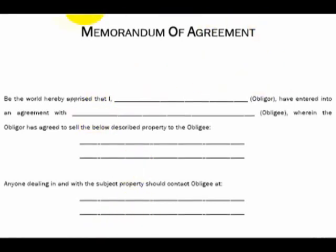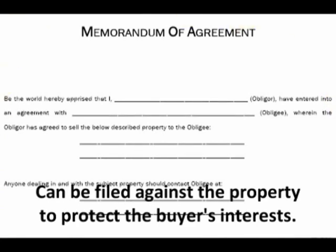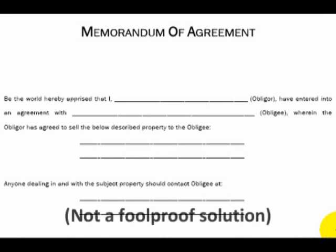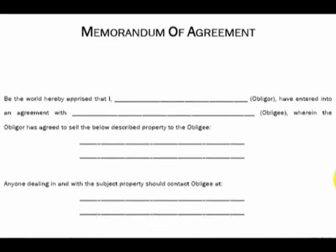A Memorandum of Agreement is basically an agreement that can be filed against the property at your local county courthouse. It gives public notice to the entire world that you have an agreement to purchase the property from the homeowner. Therefore, technically, the homeowner is not supposed to be able to sell the house unless this Memorandum of Agreement is wiped away. Realistically, this Memorandum serves about 80% of that purpose, because properties actually can be sold even though this is recorded against it.